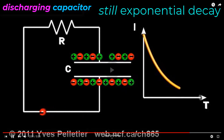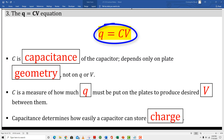Box number three: here's the Q equals CV equation. It relates capacitor charge, capacitance, and voltage. We should first note that a capacitor's capacitance does not depend on anything other than plate geometry. Later we'll update that statement, but for now only the plate size and the plate separation determine capacitance. Capacitance is a measure of how much charge must be deposited on the plates to produce a desired voltage between the plates. Another way to think of it: capacitance determines how easily a capacitor can store charge.